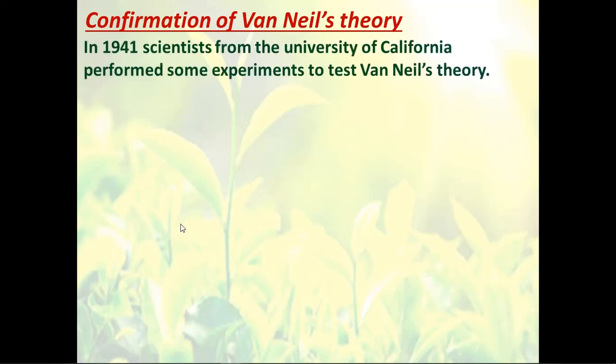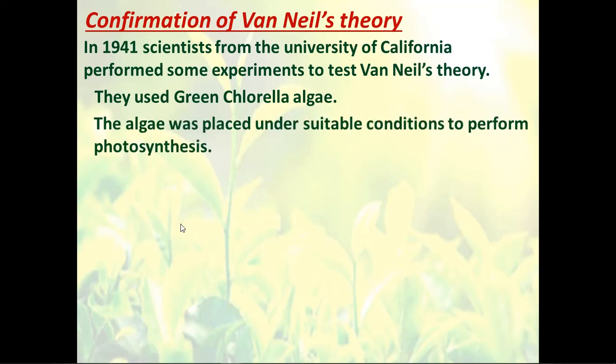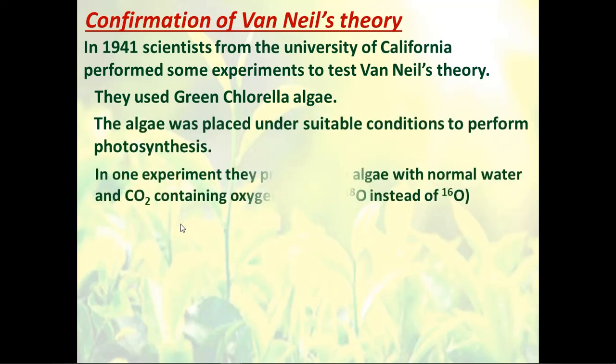Some other scientists in 1941 at the University of California needed to make sure that Van Neel's theory was right. So they made another experiment using green chlorella algae, placed in suitable conditions to perform photosynthesis. They had two experiments. In one experiment, they provided the algae with normal water and carbon dioxide containing an oxygen isotope. An isotope is a very similar atom to the original atom, but the number of neutrons is different.